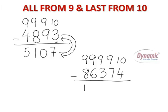9 minus 8 gives you 1, 9 minus 6 gives you 3, 9 minus 3 gives you 6, 9 minus 7 gives you 2 and 10 minus 4 gives you 6. Remember the last number has to be subtracted from 10.